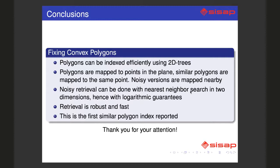Noisy retrieval can be done with nearest neighbor search in two dimensions - just two dimensions. Retrieval is robust and fast. And by the way, this is the first reported index for similar polygon retrieval. That's it. Thank you very much for your attention.